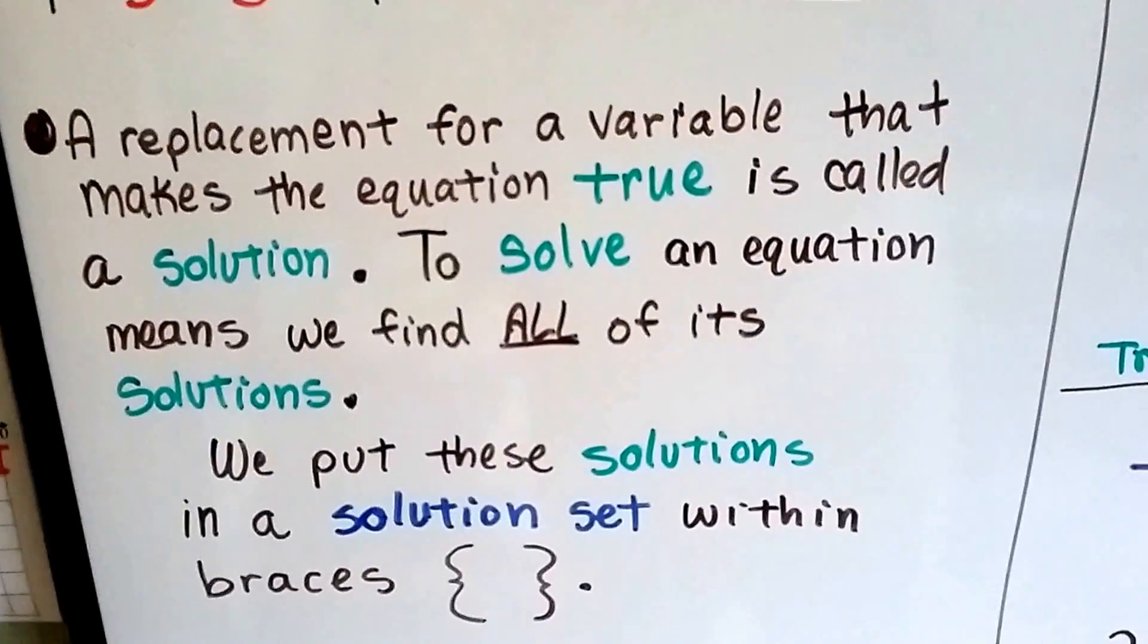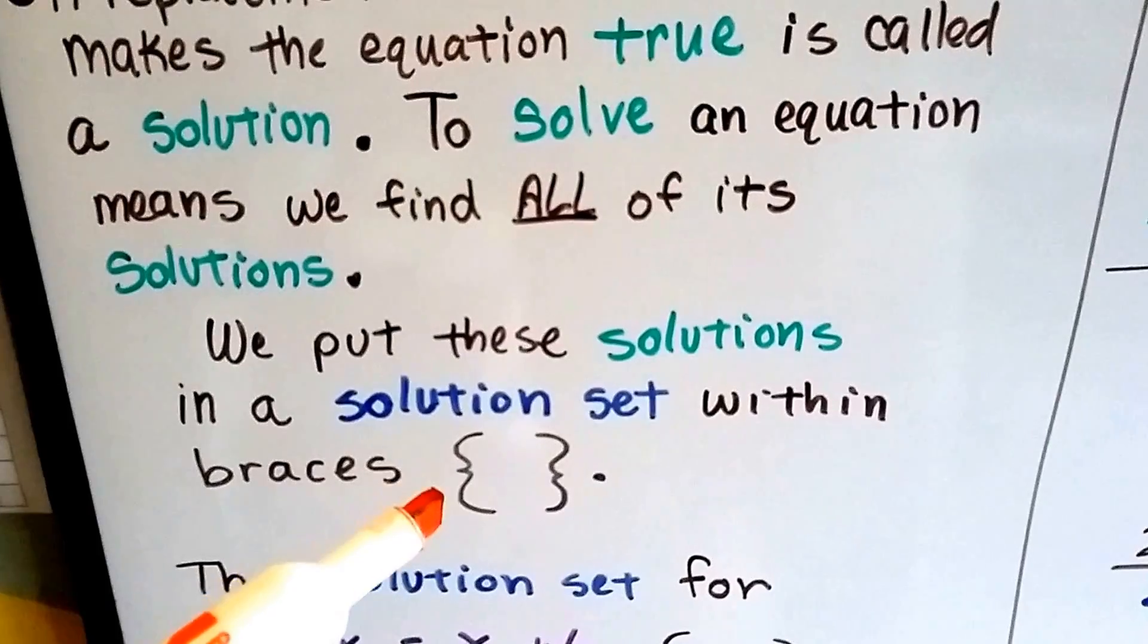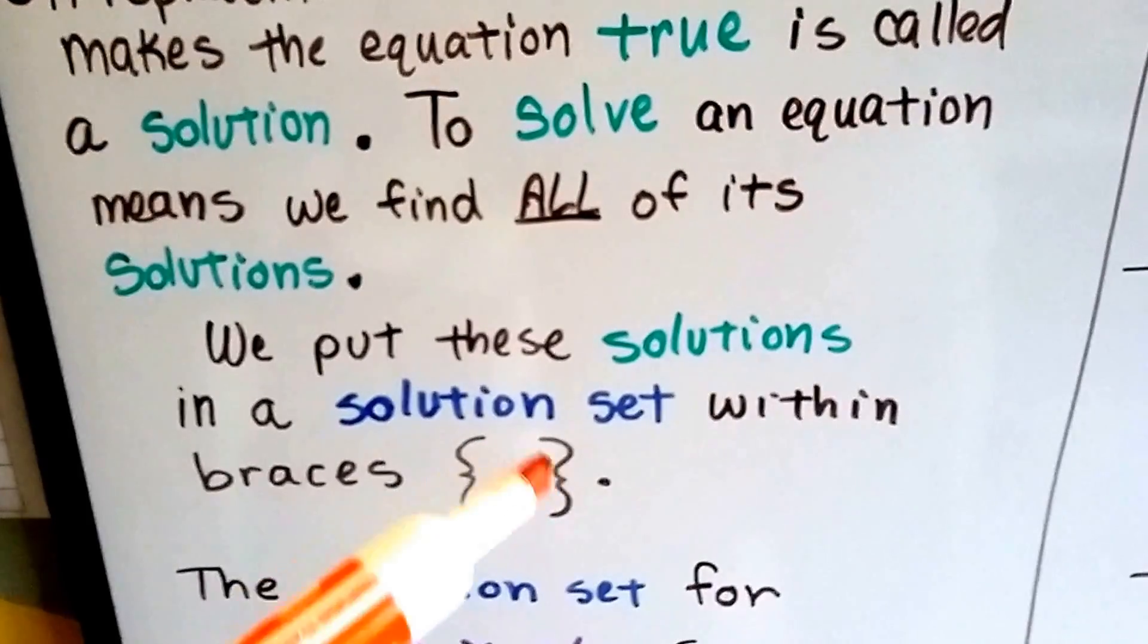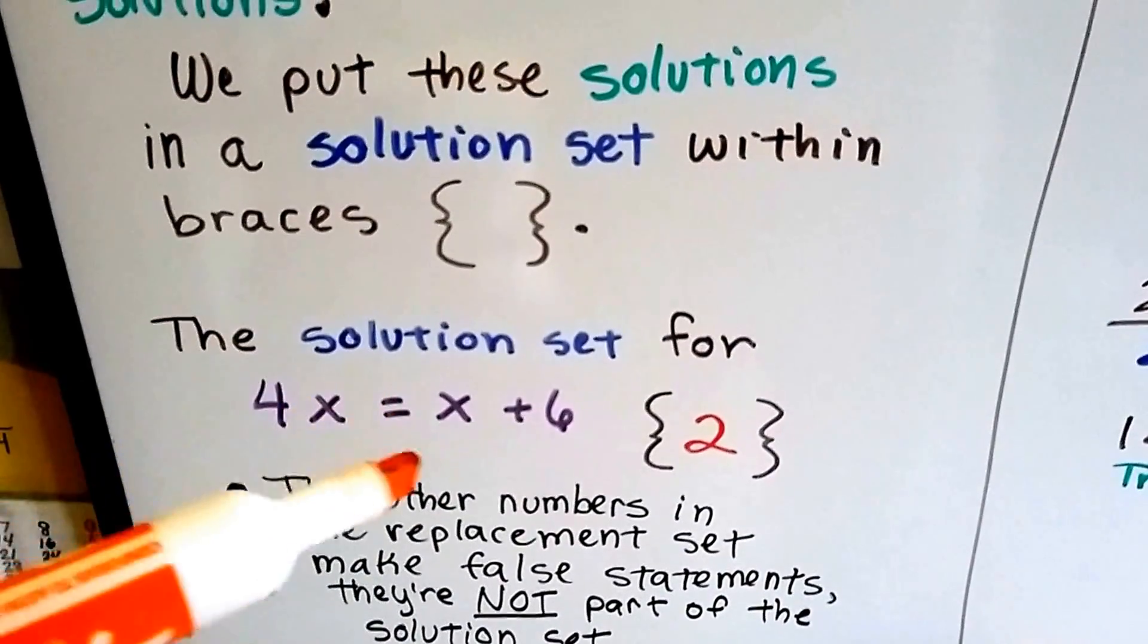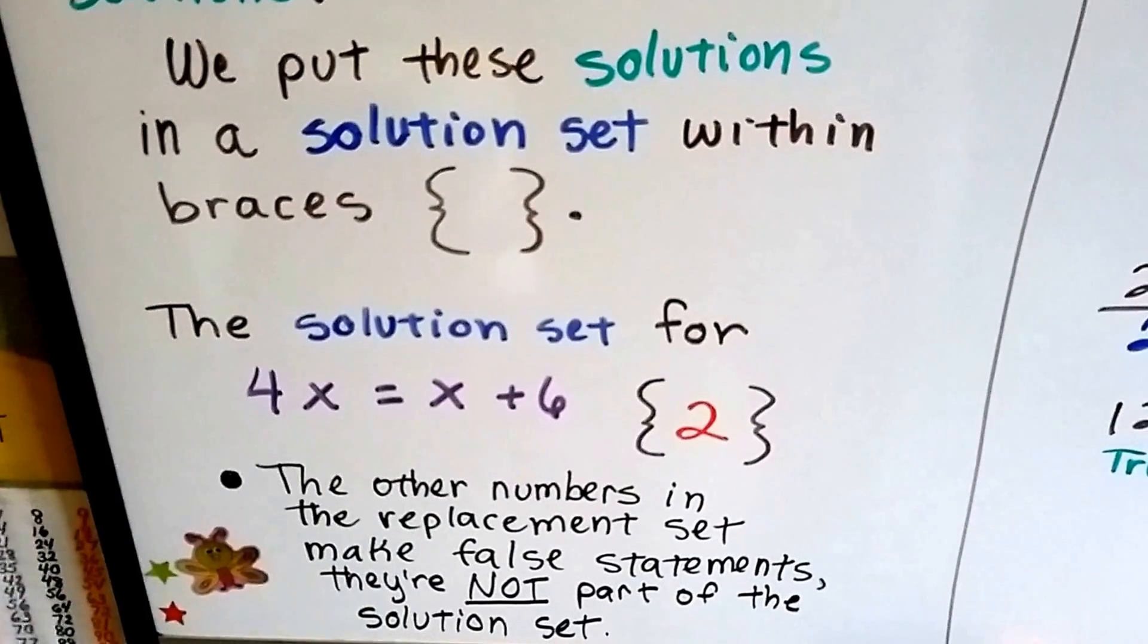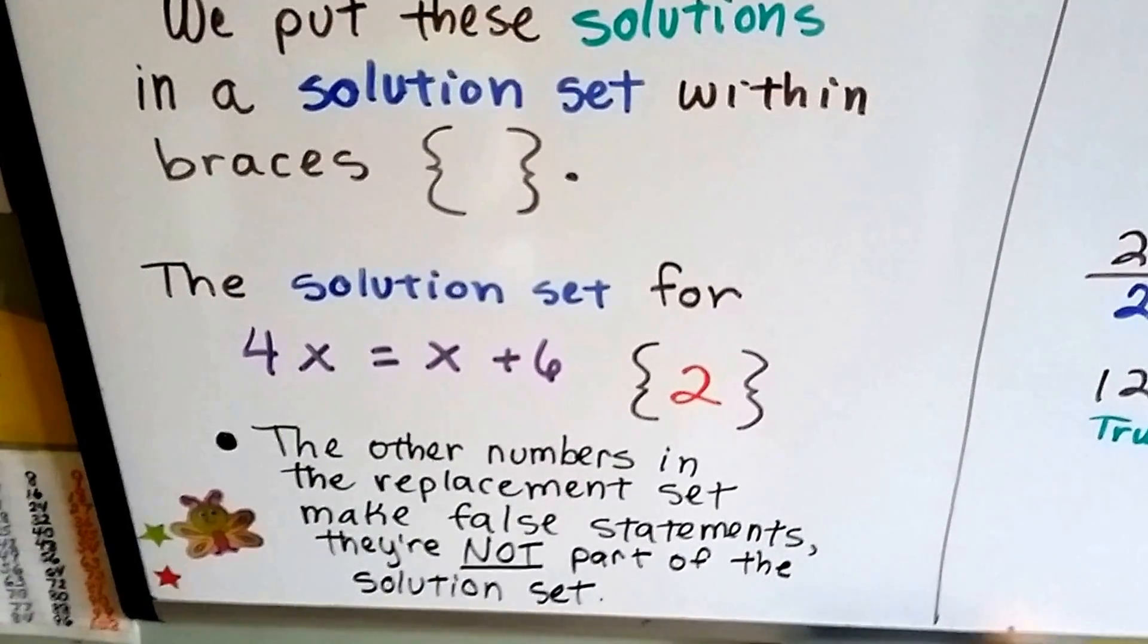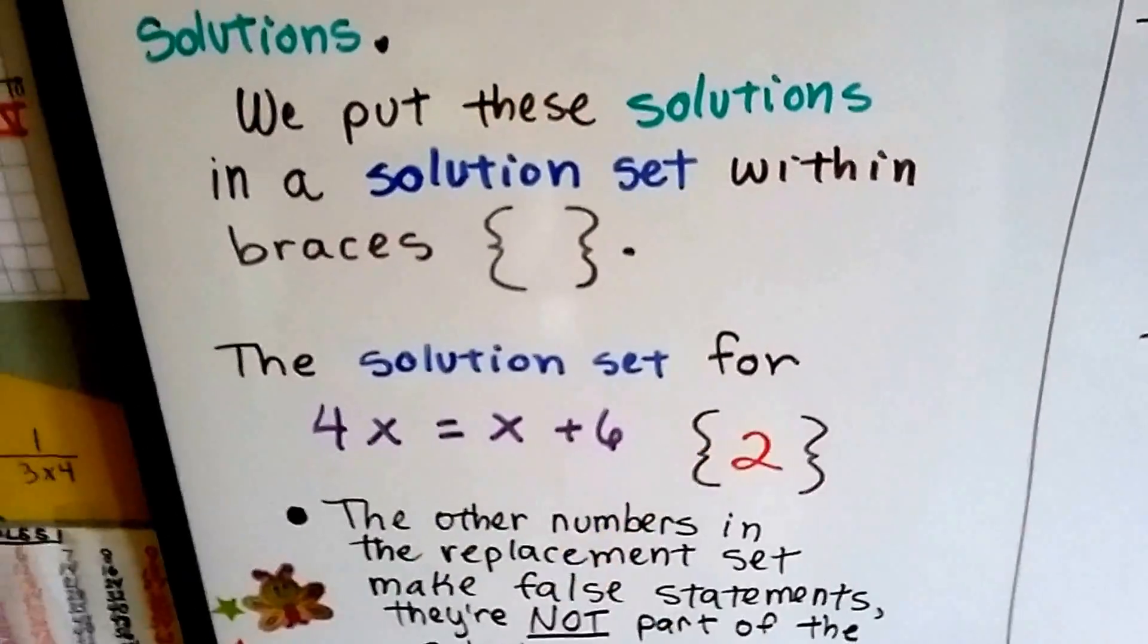And to solve an equation means we find all of its solutions. And we put these solutions inside a solution set within braces. They're inside of here. The solution set for 4x equals x plus 6 is a 2, and it's all by itself in the braces. The other numbers in the replacement set make false statements. They're not part of the solution set. So the only part of the solution set is that 2.